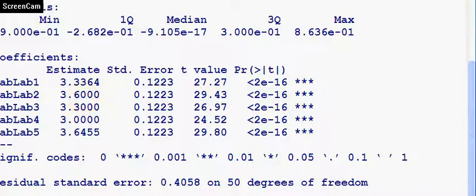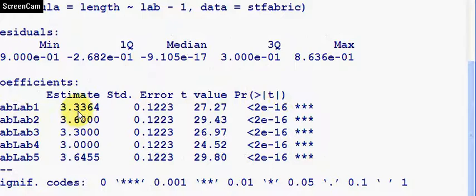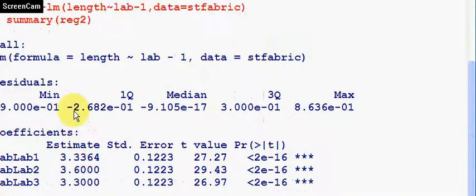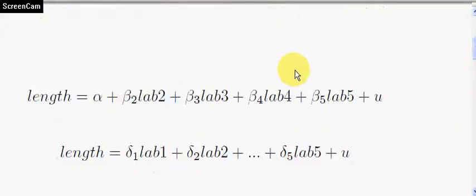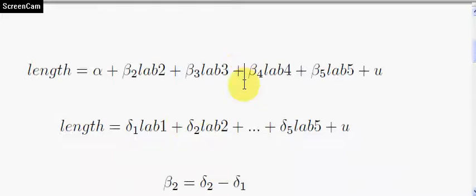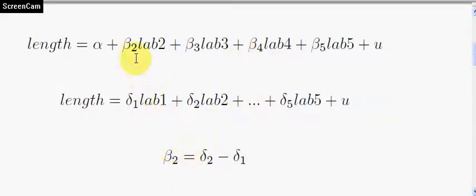Now, have a think about this. Isn't there a relationship here between the coefficients of our second model and of our first model? Well, have a think. Let's look back at this. This first model, second model. Now, there is a relationship between these betas and our deltas, because, look, you can see, for example, that the beta two here is actually the difference of delta two and delta one, i.e., the difference of the means of lab two and lab one, because that is what this is.